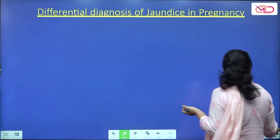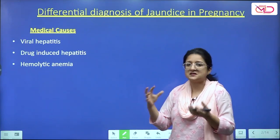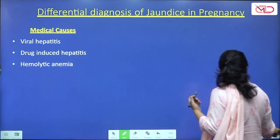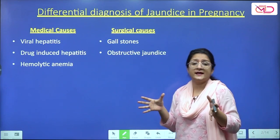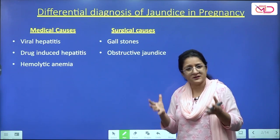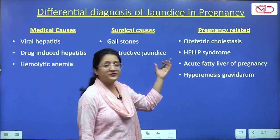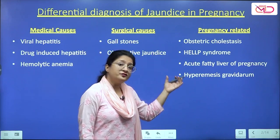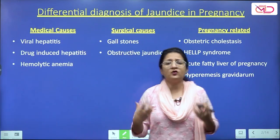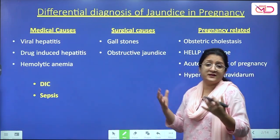For example, there can be medical causes: a woman could be suffering from viral hepatitis — acute or chronic — drug-induced hepatitis, or hemolytic anemia. There could also be surgical causes like gallstones causing obstructive jaundice or biliary tract diseases. Then we have causes which are very specific and peculiar to pregnancy: obstetric cholestasis, HELLP syndrome, acute fatty liver of pregnancy, and hyperemesis gravidarum.